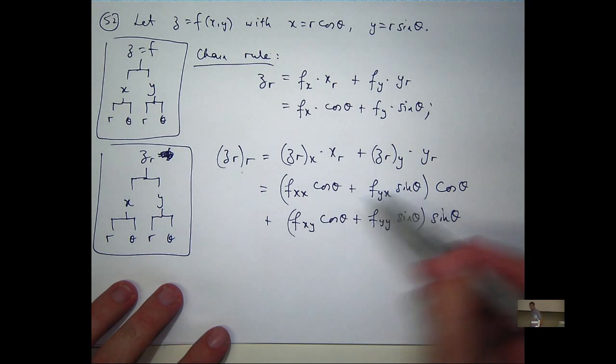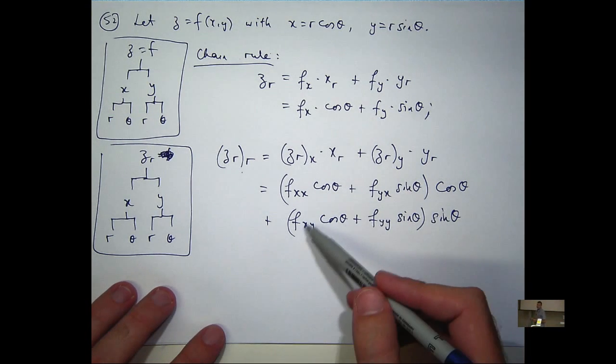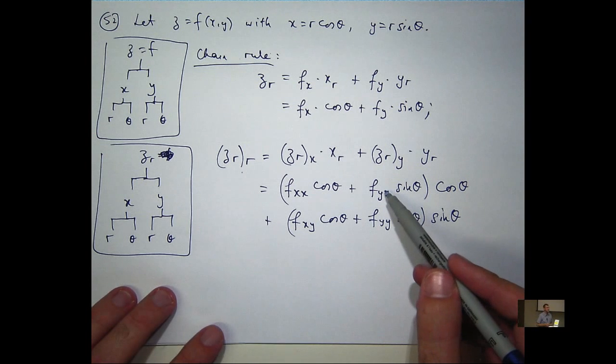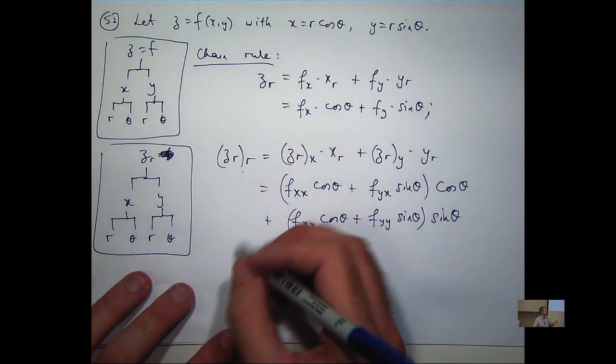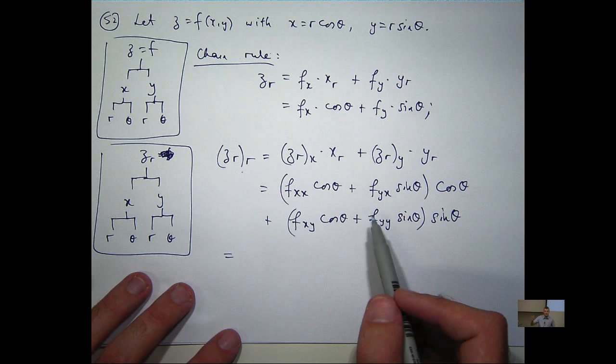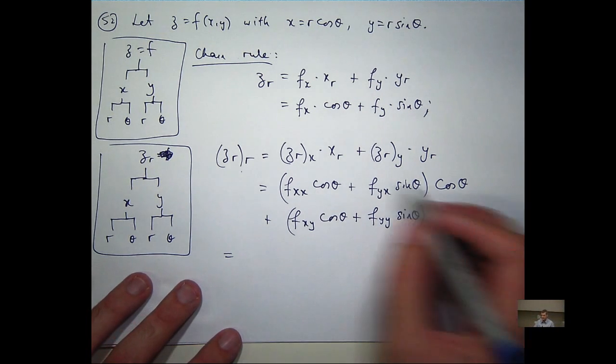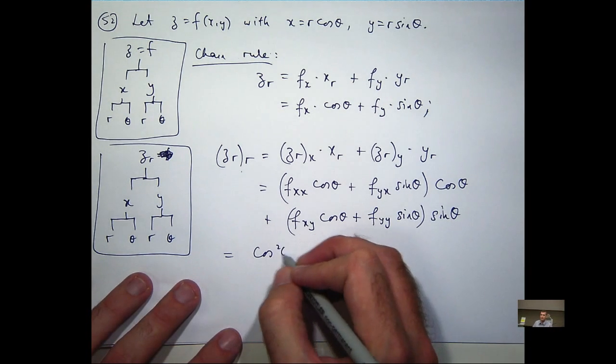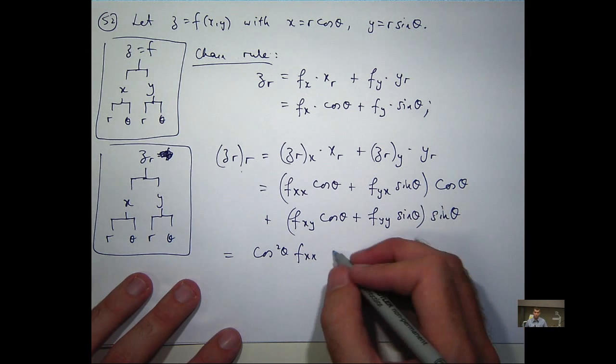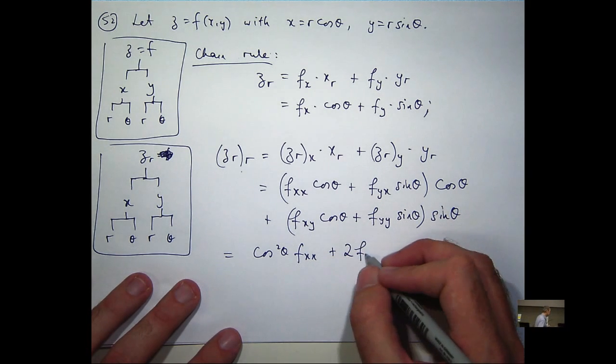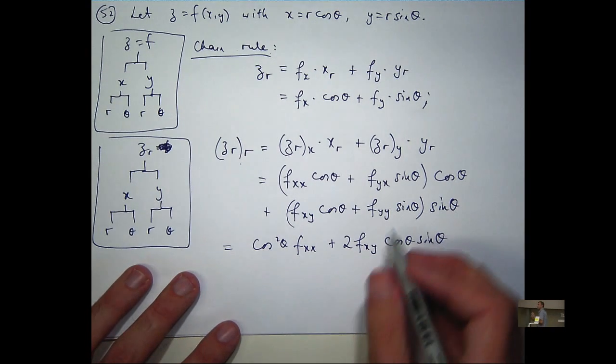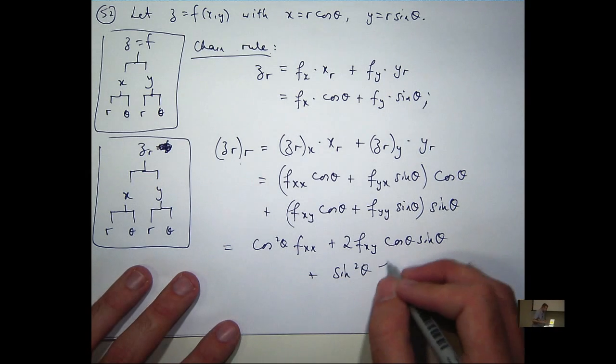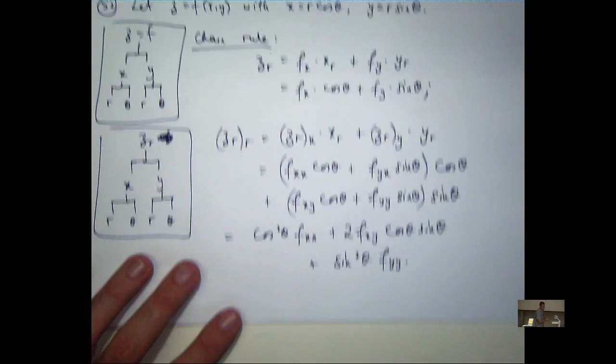Now, assuming that these mixed partials are equal, I can sort of add these together. I'm going to get the same sort of terms. And I think that's a reasonable assumption to make. So I can simplify a little bit. I'll take a cos squared out there, and I can expand that and get 2 f sub xy cos theta sine theta. And then the last one's going to be sine squared theta f sub yy.